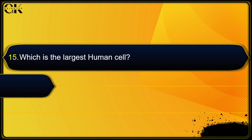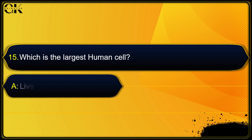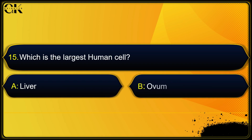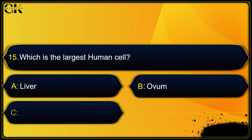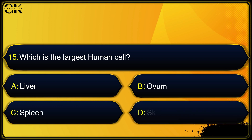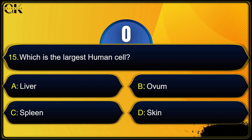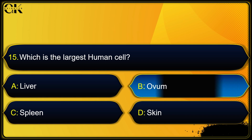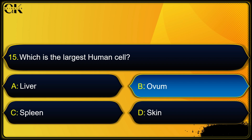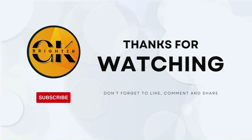Which is the largest human cell? Options: liver, ovum, spleen, or skin. The answer is ovum. If you like the video please like, share, and subscribe.